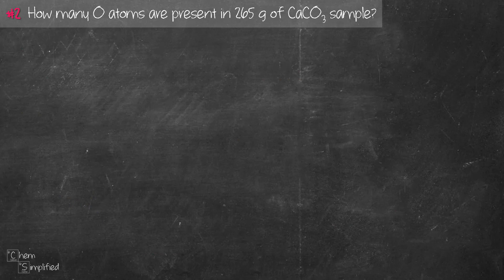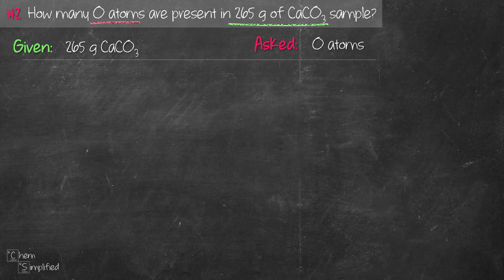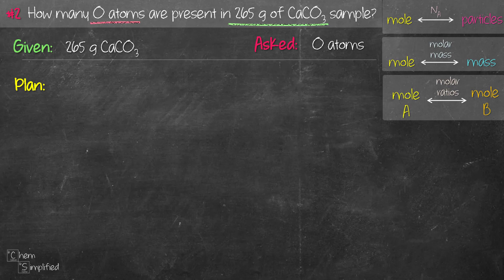Here's our next question — feel free to pause if you want to give it a shot first. We're asked: how many oxygen atoms are present in 265 grams of a CaCO3 sample? We're given 265 grams of CaCO3 and asked to find the oxygen atoms. This isn't as straightforward as the first question, but we've got this. Let's list out the relationships we have. Since we're not dealing with any gas, I'll exclude the gas relationship at STP.